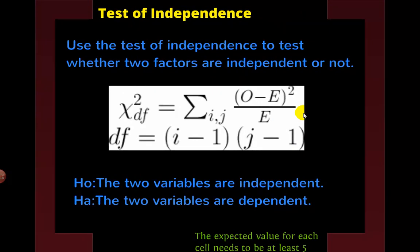For the next one — the test of independence — notice it's very similar. The formula is very similar: observed minus expected, squared, over expected. But we're going to have more rows and columns in our contingency table. That's why it's not just k — it's not just one list. We'll have groups — for example, a 3 by 3 table — and we'll have 9 pieces that we have to figure out.